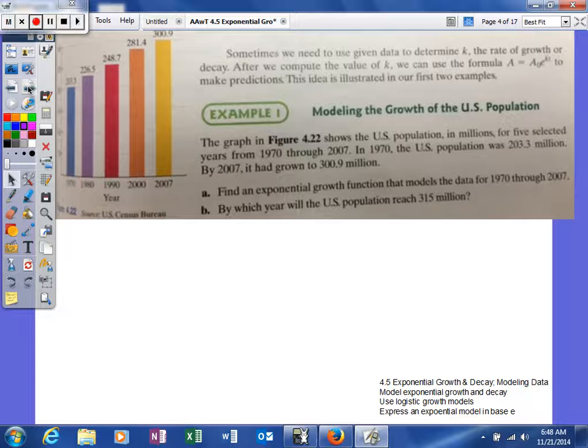It says modeling the growth of the U.S. population. The graph in Figure 4.22 shows the U.S. population in millions for five selected years from 1970 to 2007. In 1970, the U.S. population was 203.3 million. By 2007, it had grown to 300.9 million. One important thing to realize is what your units are in problems. Since we're talking in terms of millions, realize when we get our answer it's going to be in terms of millions.